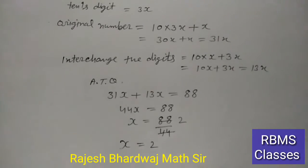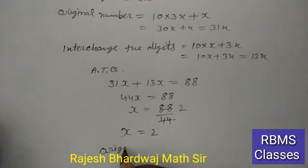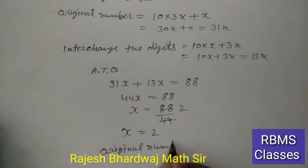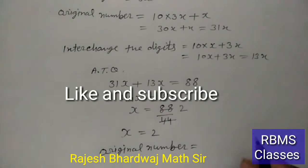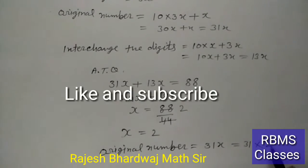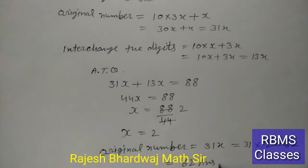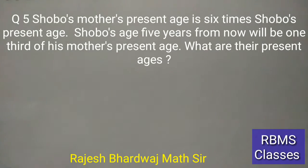ठीक है बच्चों? अब हमने निकालना original number है। Original number = 31x था, तो 31 × 2 = 62। तो यहां पे आपका answer 62 होगा।